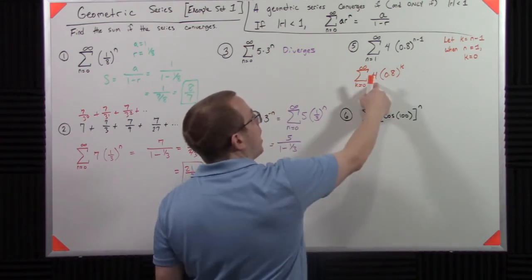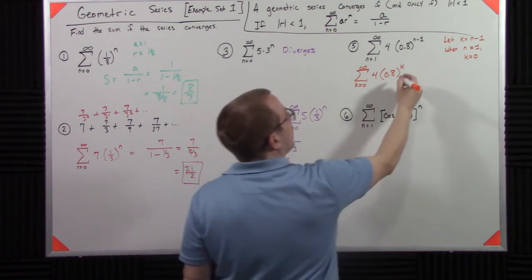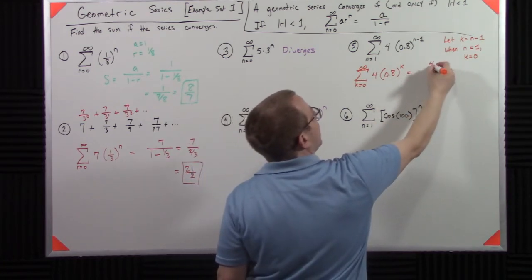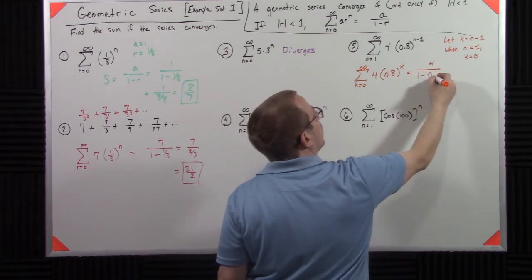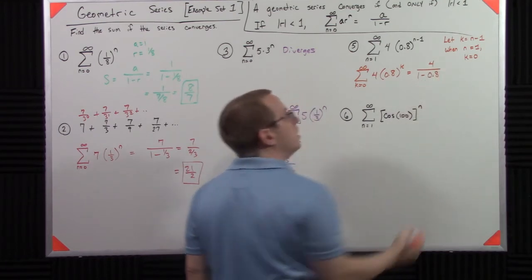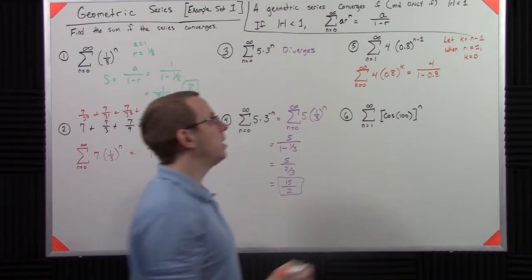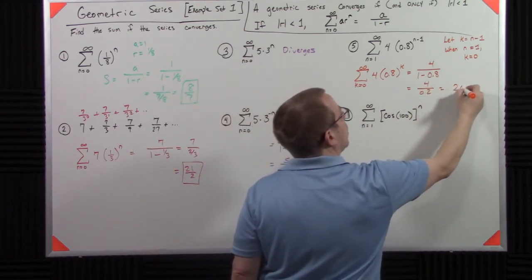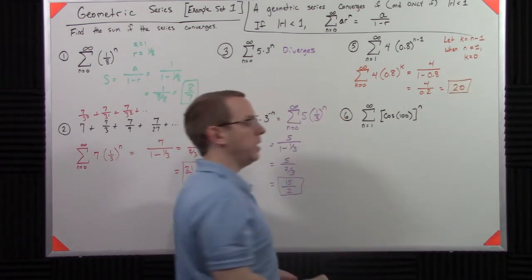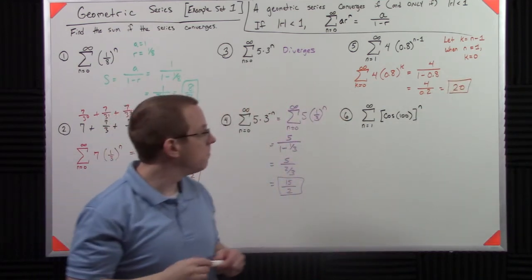So to do that, I say okay, well that tells me a is 4, r is 0.8. So it's 4 divided by 0.8. So that's 4 over 0.2 or 20. Simple enough.